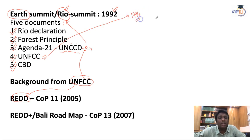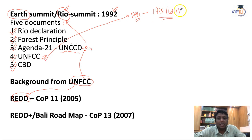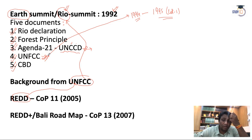UNFCCC came into force in 1994 and its first Conference of Parties (COP 1) was held in 1995. The purpose of UNFCCC is to stabilize greenhouse gas emissions in the atmosphere — to ensure emissions do not damage the environment. Global warming is the main concern, and UNFCCC works extensively toward greenhouse gas emission reduction.